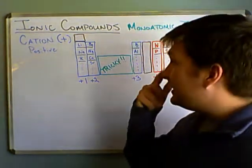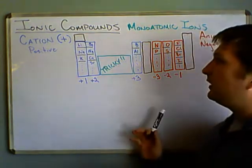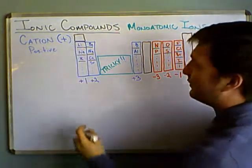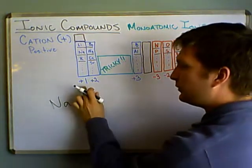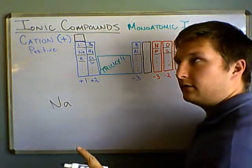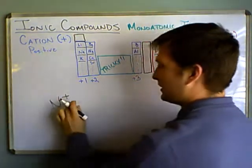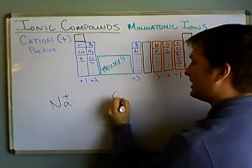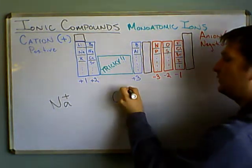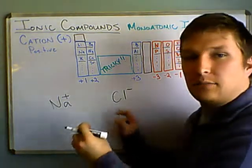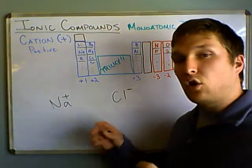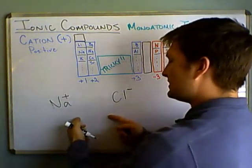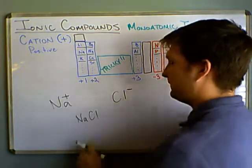Let's discuss how to name a monoatomic ionic compound. Say we have an ion of sodium — that's Na. Everything in Group 1A likes to lose one electron, so it has a charge of plus one. Let's pair that with an ion from chlorine, which likes to gain one electron, giving it a charge of minus one. When these come together, you have plus one and minus one, making an overall charge of zero. That's what ions like to do — get down to zero charge. So when you put these together, you get the compound NaCl.